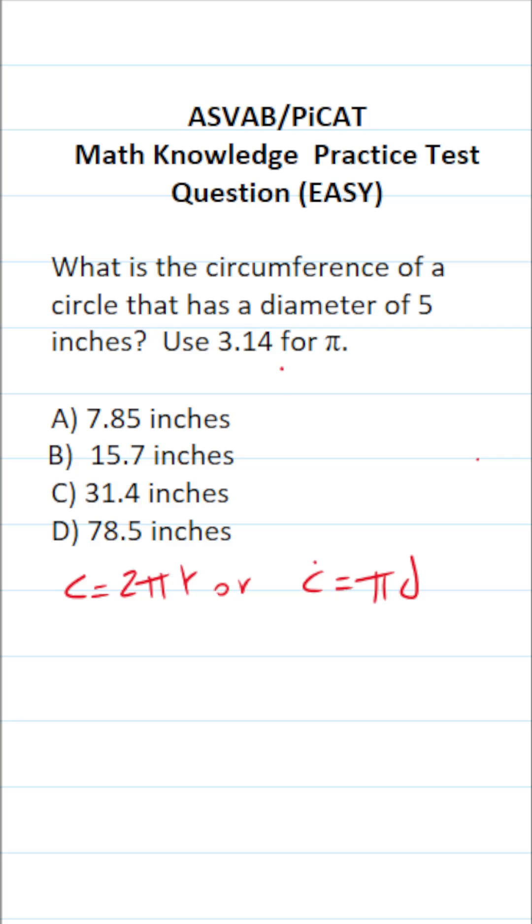In this case, we know the diameter of our circle is 5, so it's going to be easier to use this second formula. So this is going to become circumference equals π times 5. Again, we're told to let pi be 3.14, so this becomes 3.14 times 5.